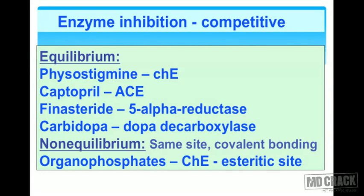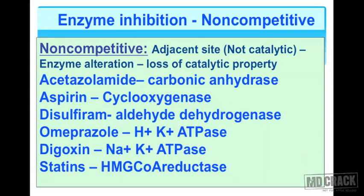Non-equilibrium enzyme inhibition is different — the drug acts on the same site but produces a covalent bonding which is more firm and difficult to reverse. For example, organophosphate compounds combine with the enzyme cholinesterase at the esteratic site, producing covalent bonding.